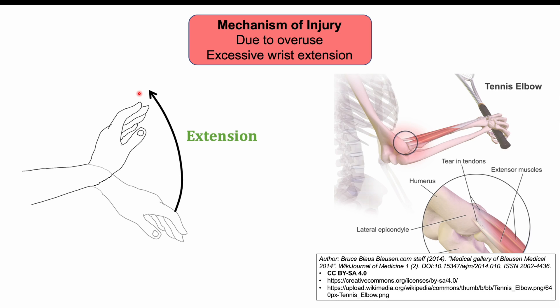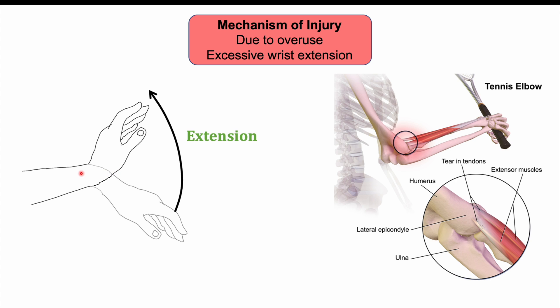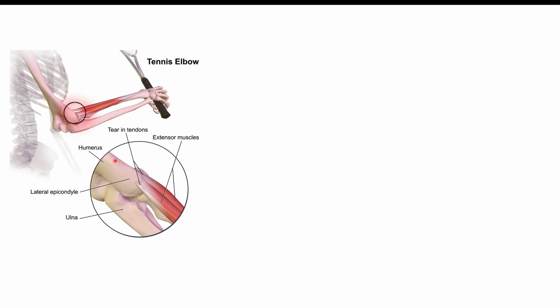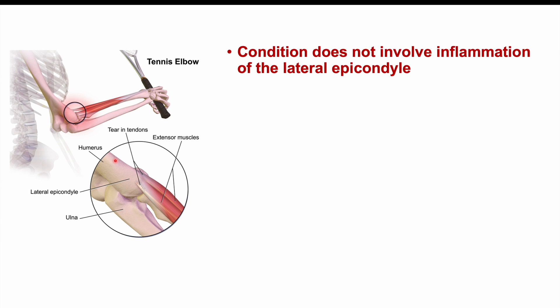This is why tennis and other racket sports can cause this condition — if you are not keeping your wrist straight, or if you are extending it excessively during a backhand, this increases the likelihood of the condition. Although this condition is called lateral epicondylitis — where 'epicondylitis' implies inflammation of the epicondyle — it actually does not involve true inflammation of the lateral epicondyle.